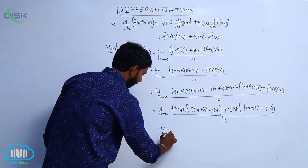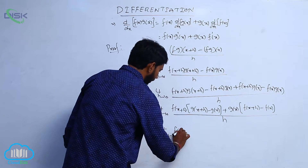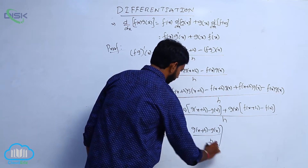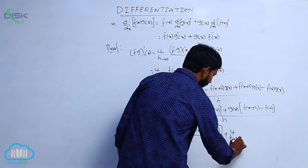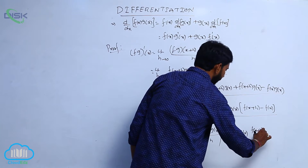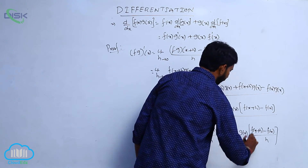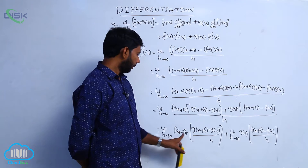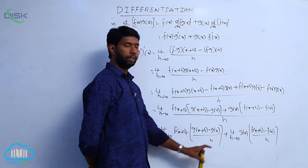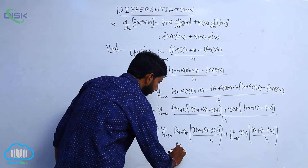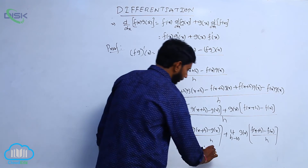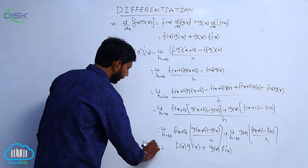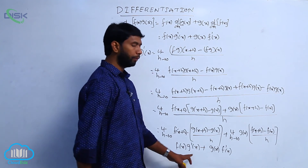Separating the limits, we get: limit h tends to 0 of f of x plus h into g of x plus h minus g of x by h, plus limit h tends to 0 of g of x into f of x plus h minus f of x by h. Since f of x and g of x are differentiable, putting h equal to 0, we get f of x into g dash x plus g of x into f dash x. Therefore, the derivative of f g of x is equal to f of x into g dash x plus g of x into f dash x.